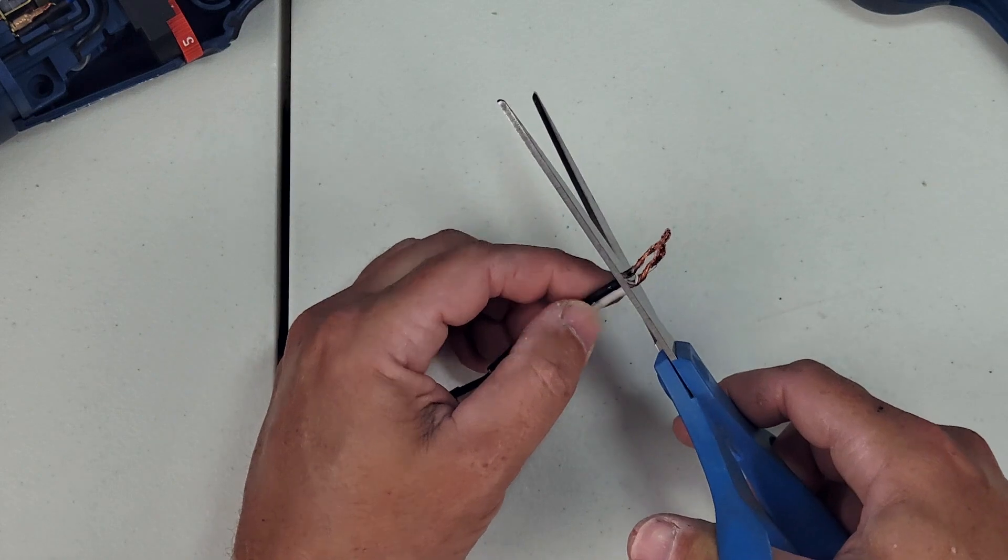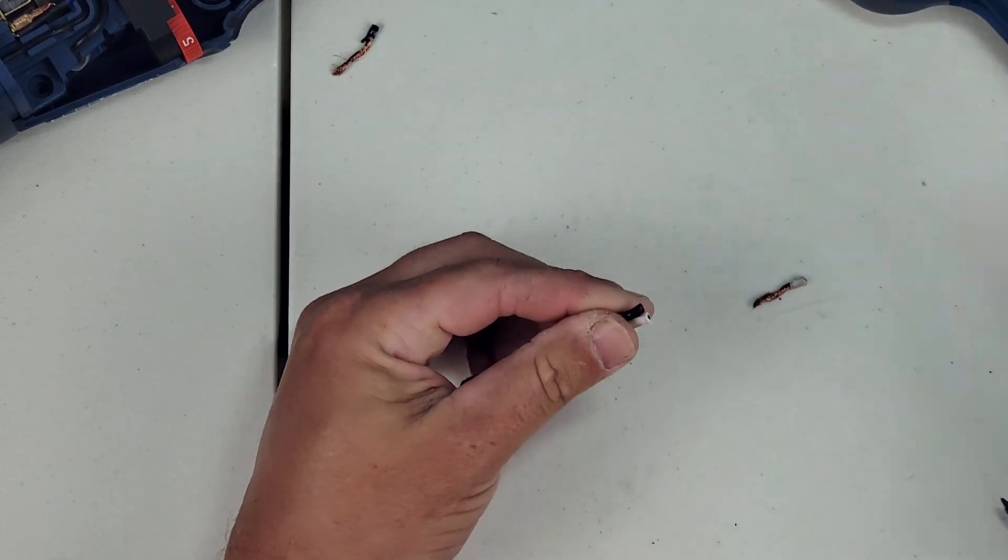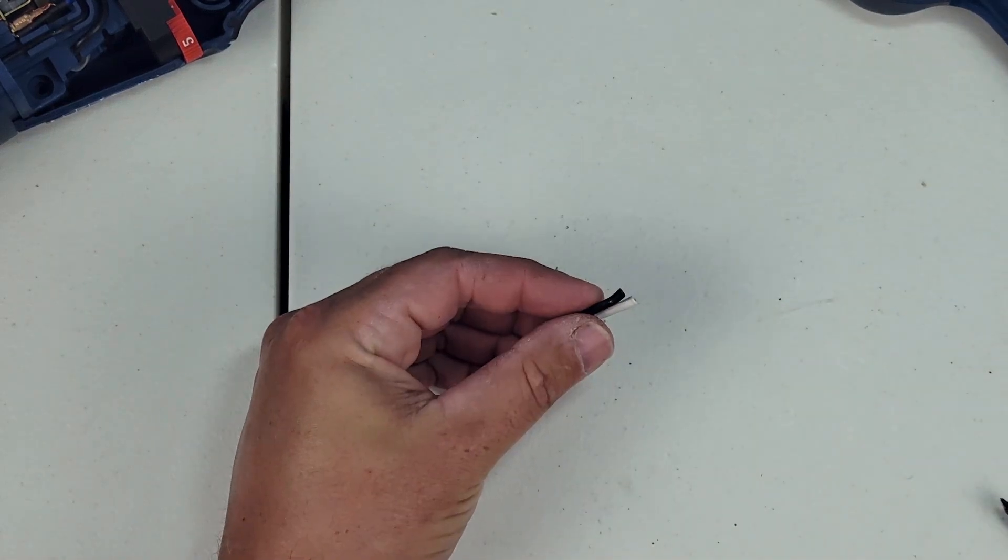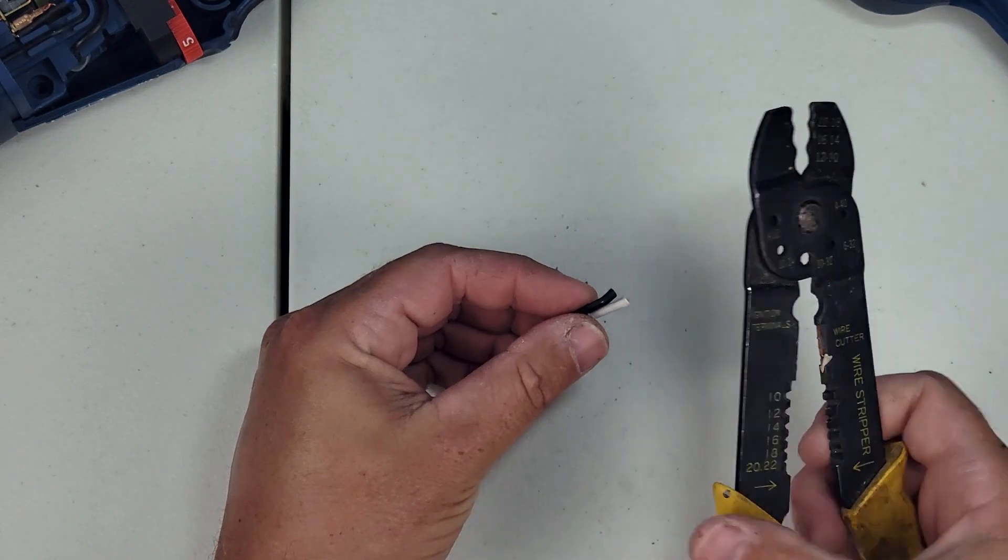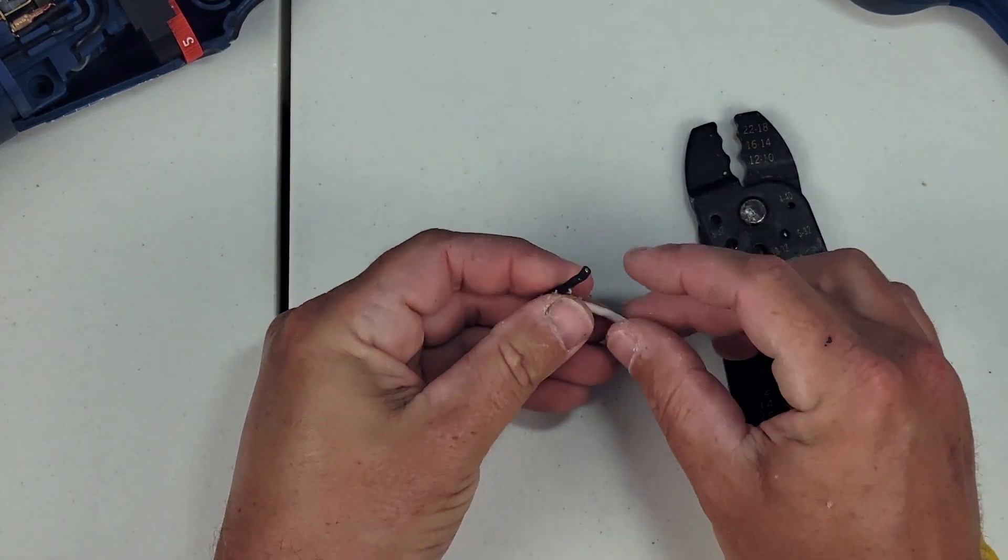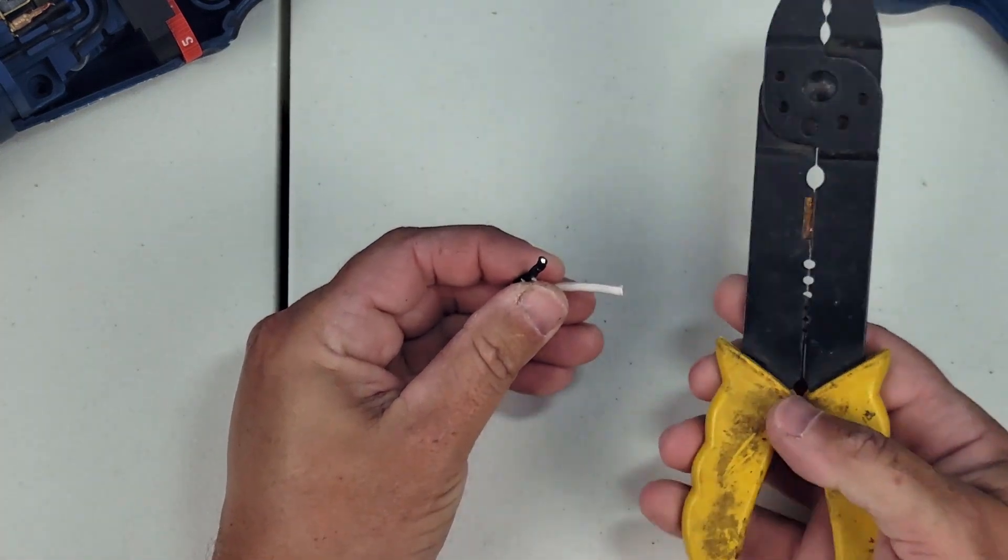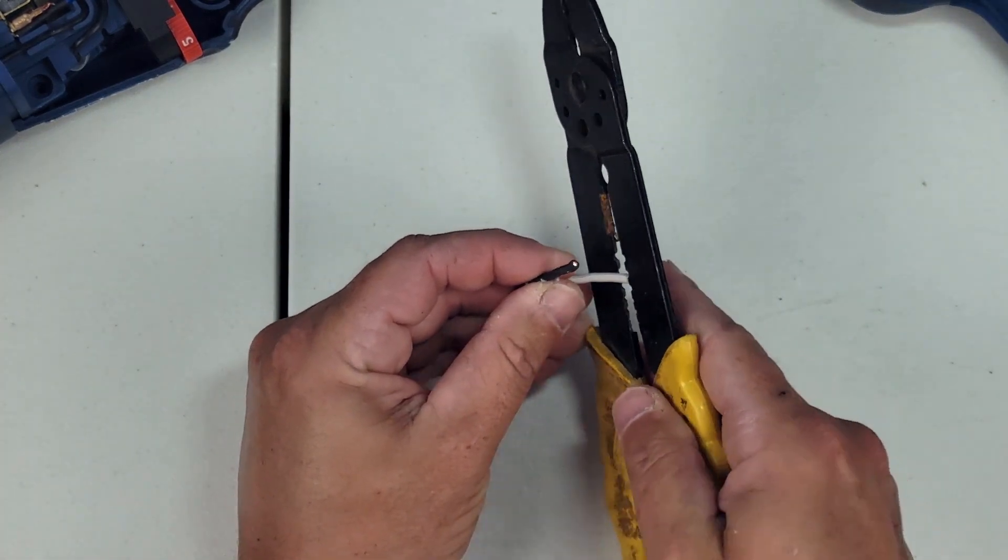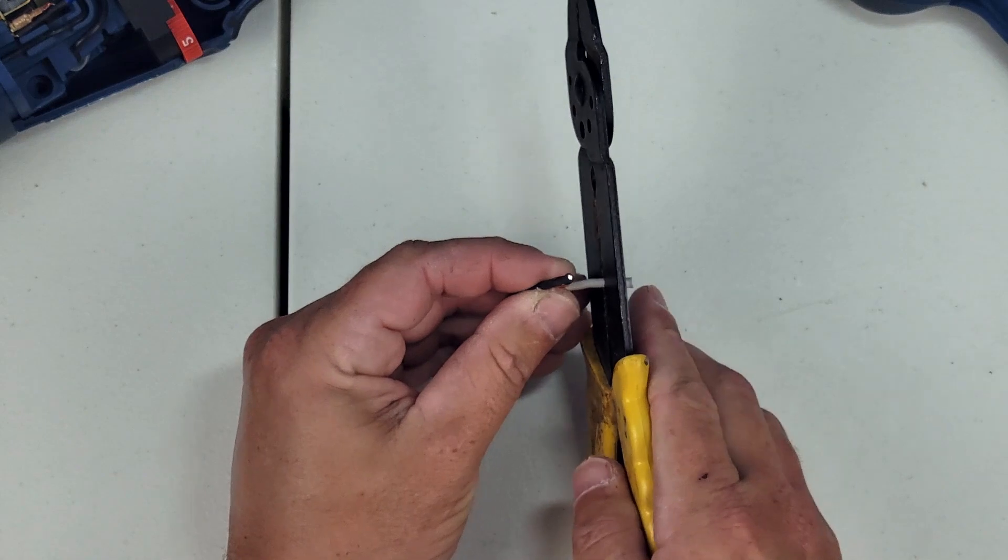Took some scissors and decided to just go ahead and cut these old wires here and take the wire strippers and just restrip them and get some fresh copper underneath. Pull them apart here, I use the 14 gauge setting on the wire strippers, and that seemed to work out pretty good.